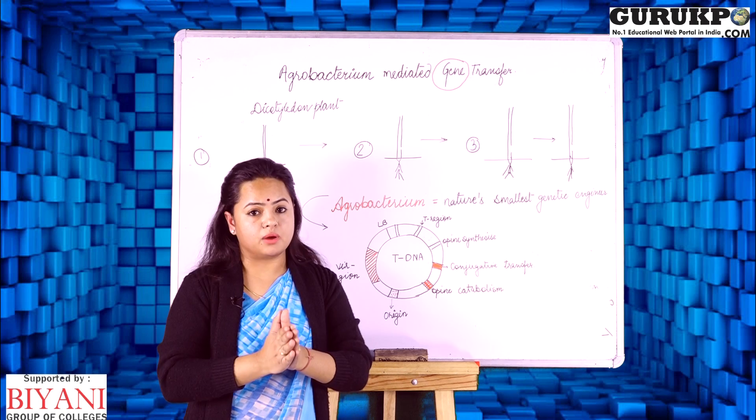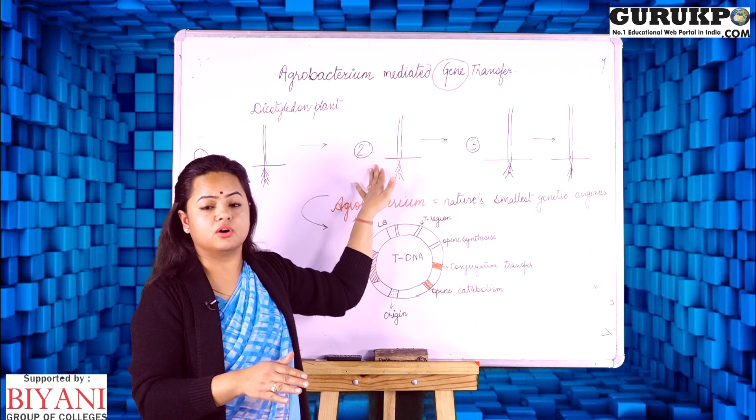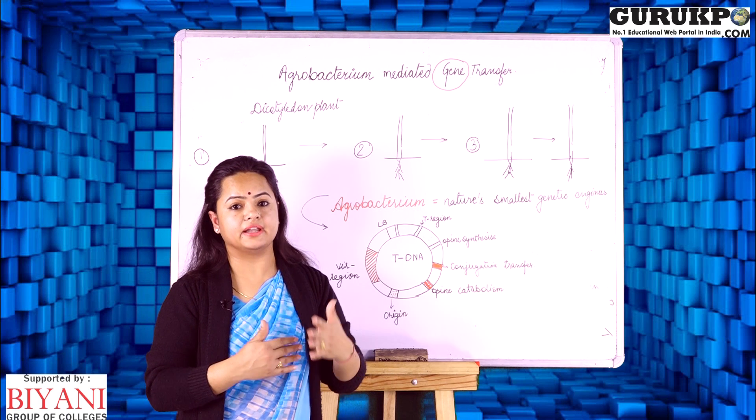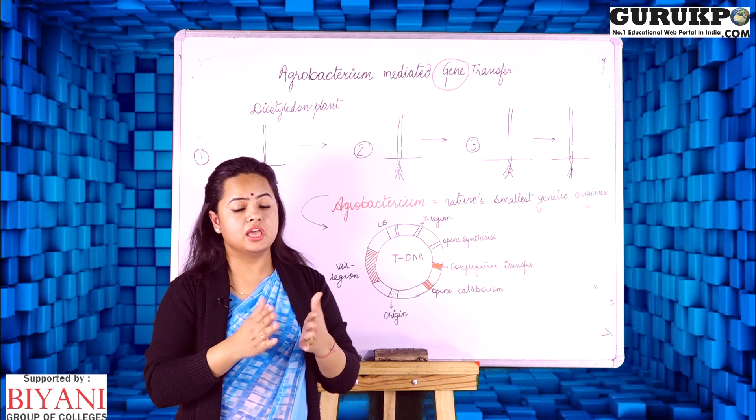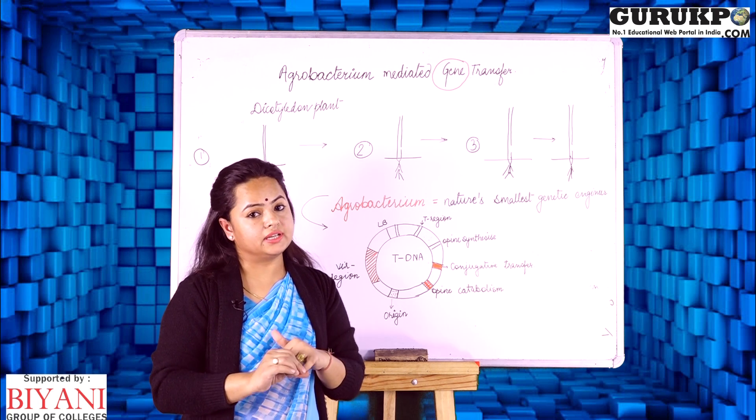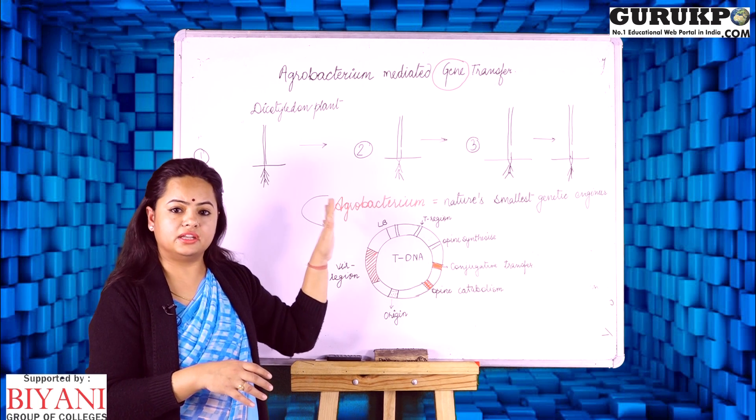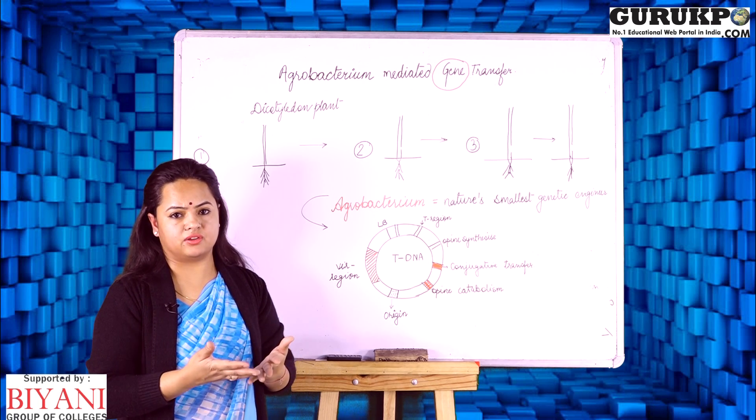But when we talk about a plant system and transferring a gene of interest so that we can get a valuable product from a plant, for example, we need to enhance the protein content of a seed. So we need a gene of interest to be integrated into the plant and it will form a protein which is miraculous.